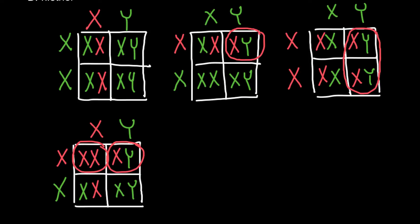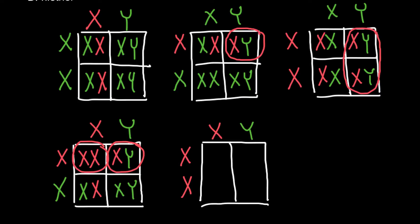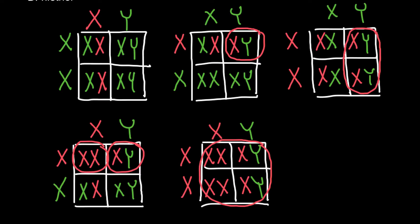In this model, both males and females would express this genetic disorder in equal numbers. The last model is when the male has a defective X chromosome and normal Y chromosome, and the female has two defective X chromosomes — meaning both the father and mother are colorblind. The Punnett square shows two defective X chromosomes in all female progeny and a defective X with a normal Y in all male progeny. In this model, 100% of the children would be affected with this genetic disorder.